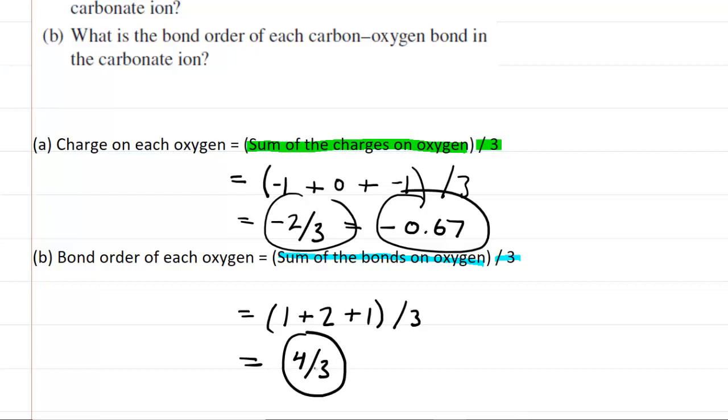In essence, it's the average number of bonds connected to that oxygen. And then if you need this in decimal form, you can pick up a calculator and divide four by three, and you would get approximately 1.33. So that is an equivalent answer.